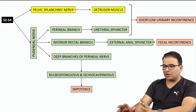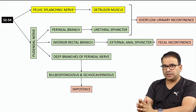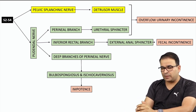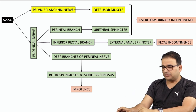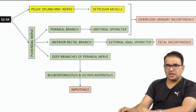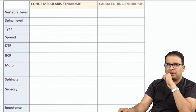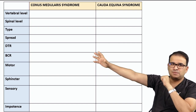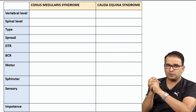Now, knowing all these anatomical aspects of the conus as well as the cauda equina, let us summarize the features of both syndromes in a tabular manner. On one side we have conus medullaris, and on the other side the cauda equina syndrome.